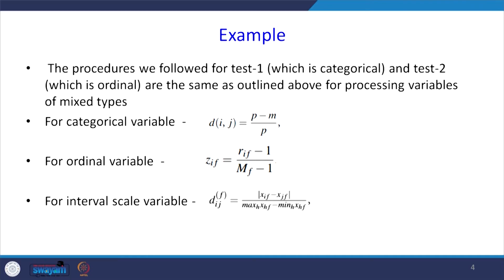The procedures followed for test one (categorical data) and test two (ordinal data) are the same as outlined above for processing variables of mixed type. For a categorical variable, we use the formula (p minus m) divided by p, where p is the number of variables and m is the number of matches. For ordinal data, we standardize to a 0 to 1 scale using the formula: Z_IF = (R_IF minus 1) divided by (maximum rank minus 1).